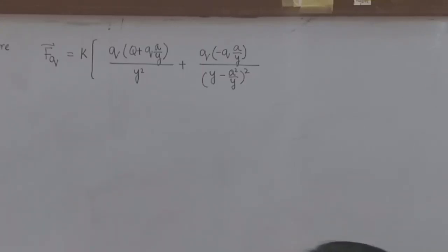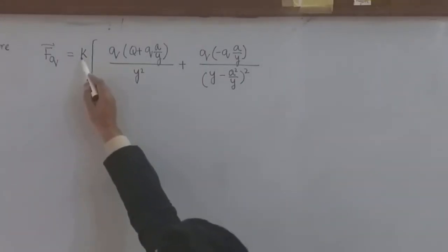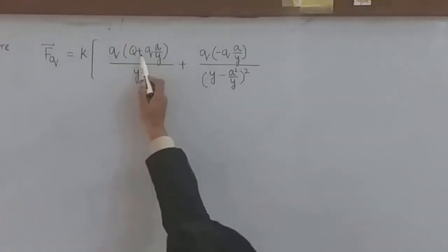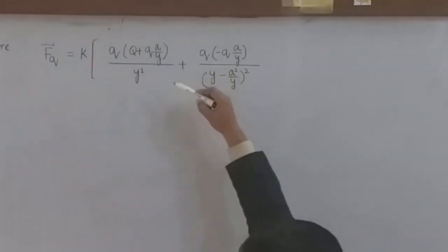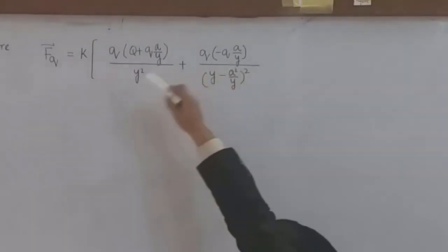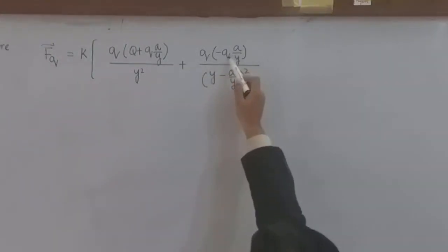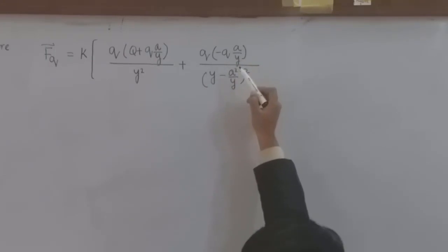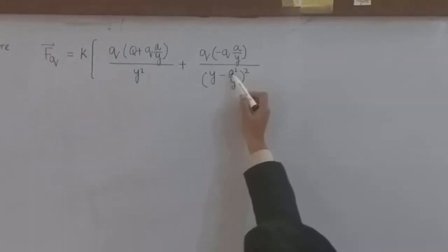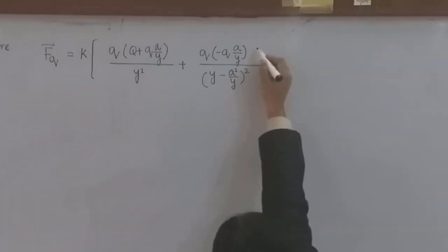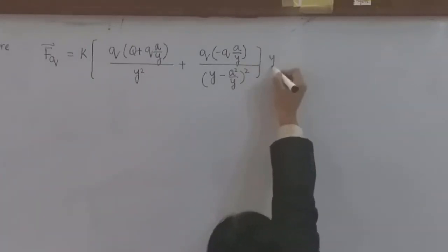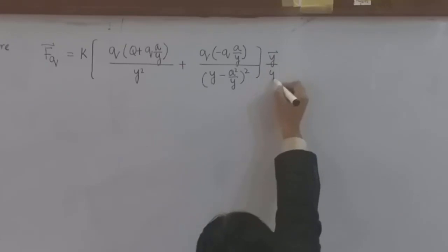So, f of q equals a. Then q double prime is q plus q·a over y, where y squared is the distance. And q prime is minus q·a over y, and y minus y prime is a squared over y. And q squared. I will have to write here that this is in the direction of y.